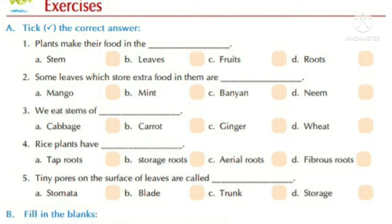The options are: stem, leaves, fruits, and roots. Option B is correct — leaves. Number two: some leaves which store extra food in them are mango, mint, banyan, and neem. Option B is correct — mint. Number three: we eat stems of cabbage, carrot, ginger, and wheat.